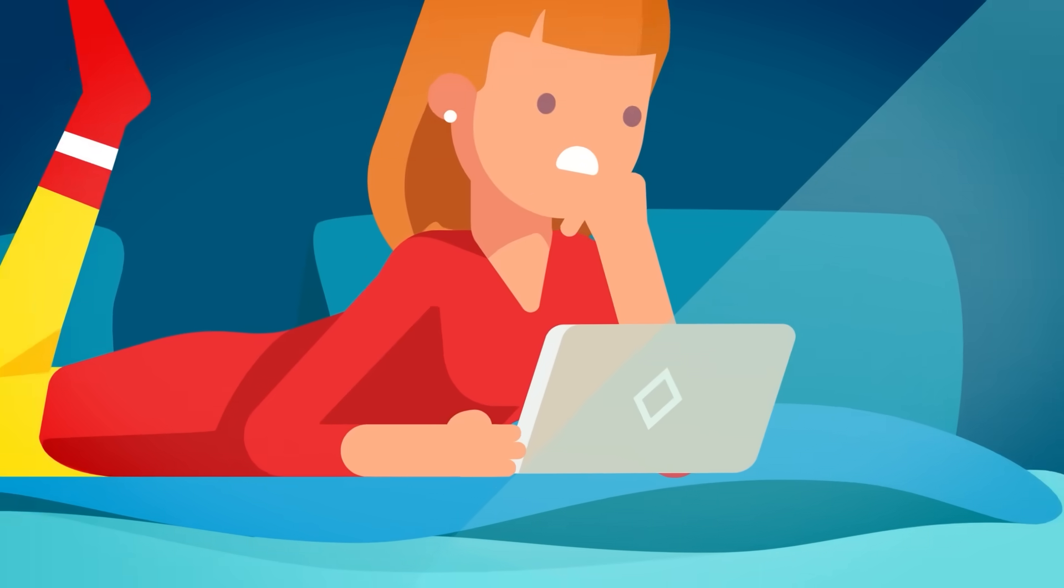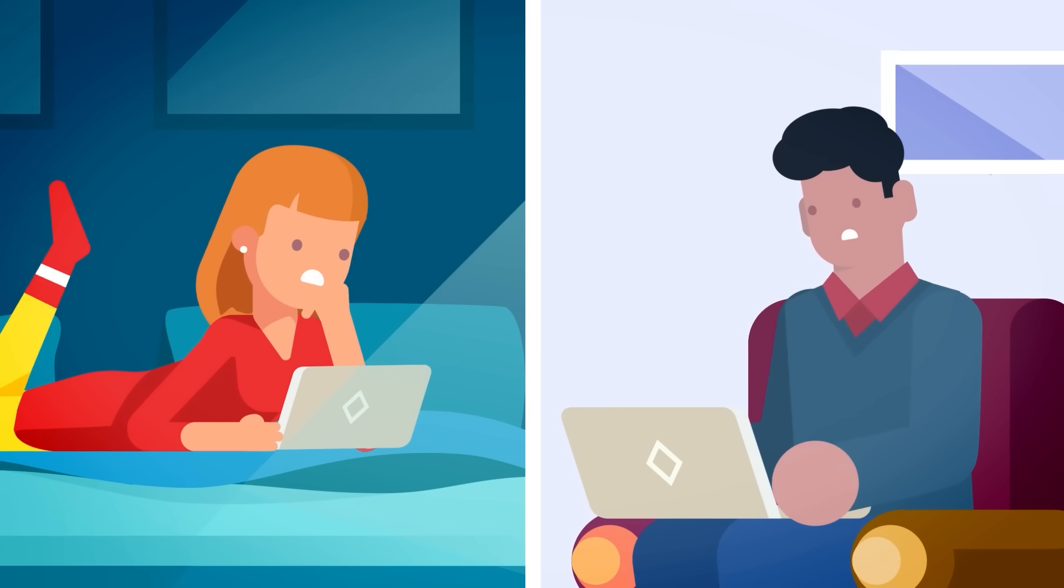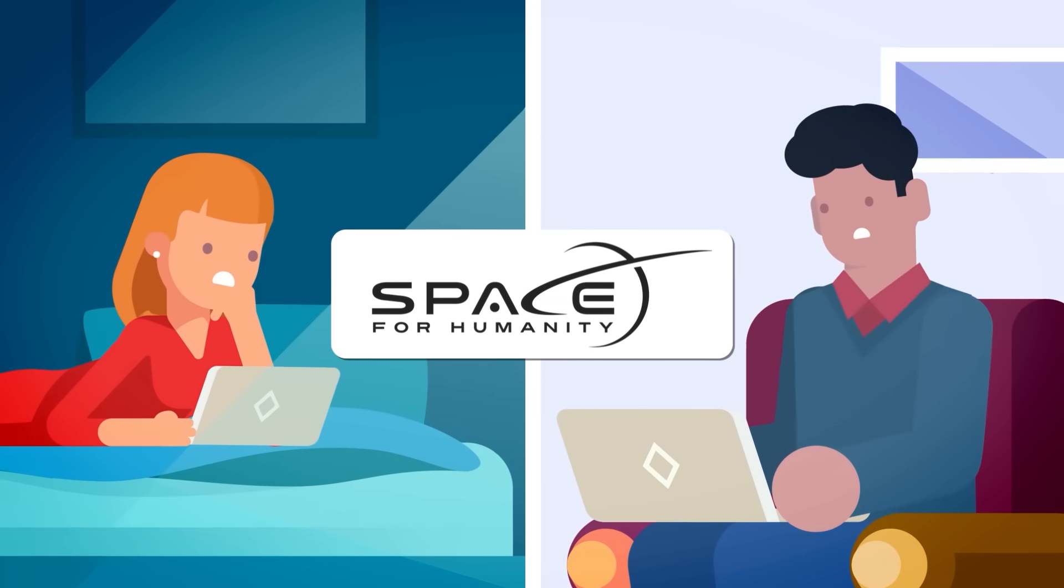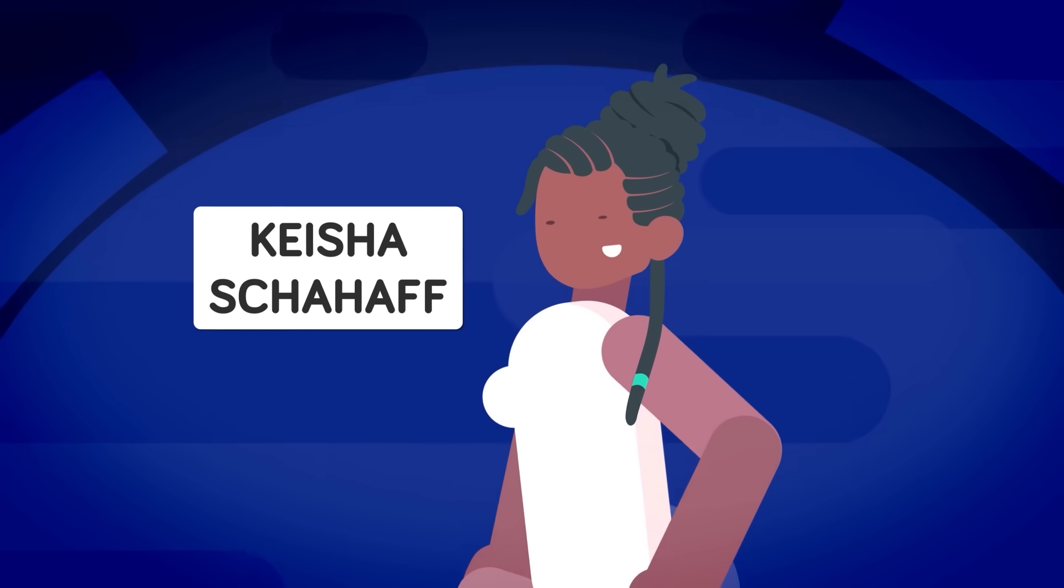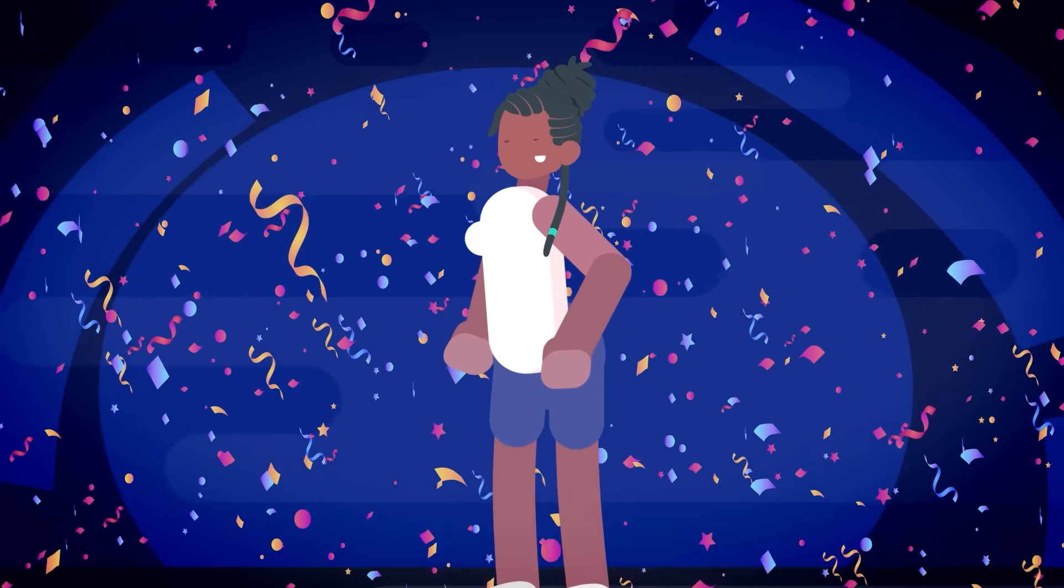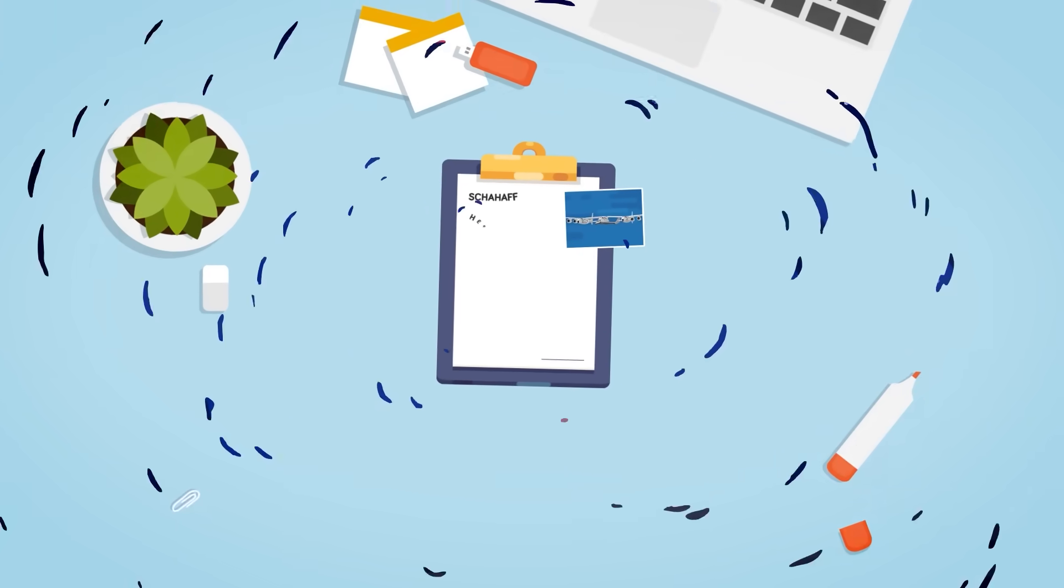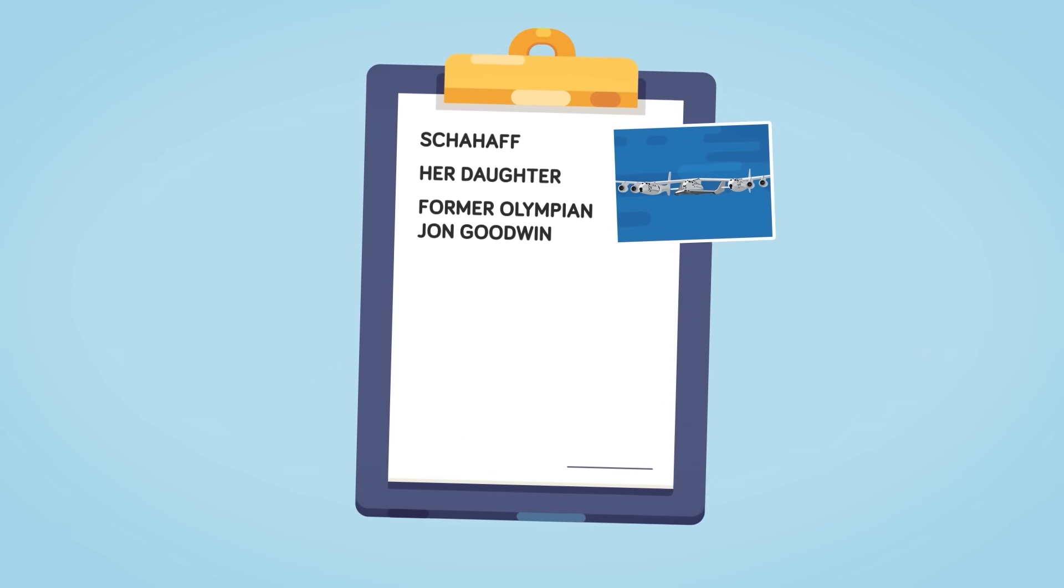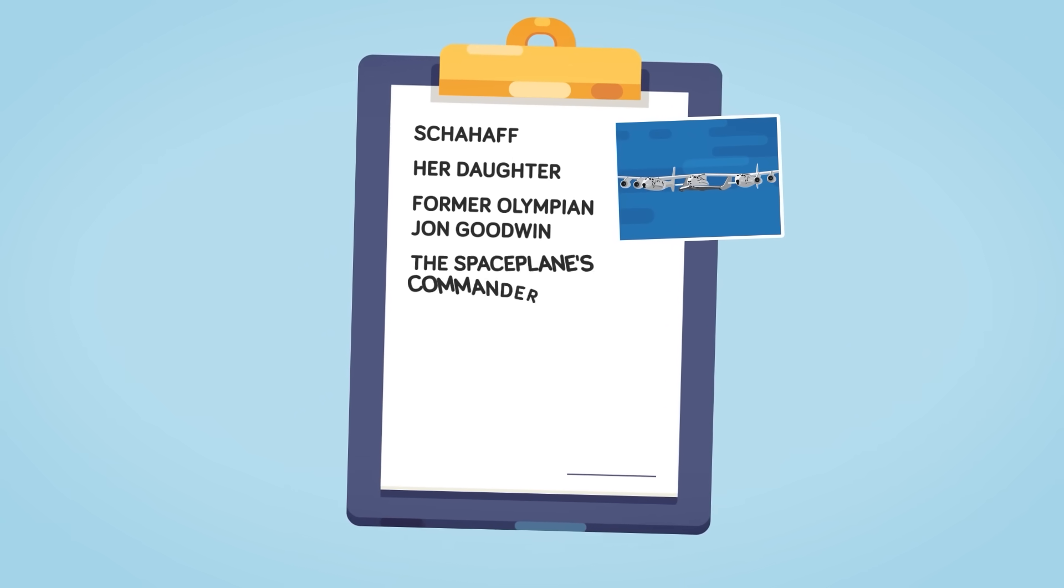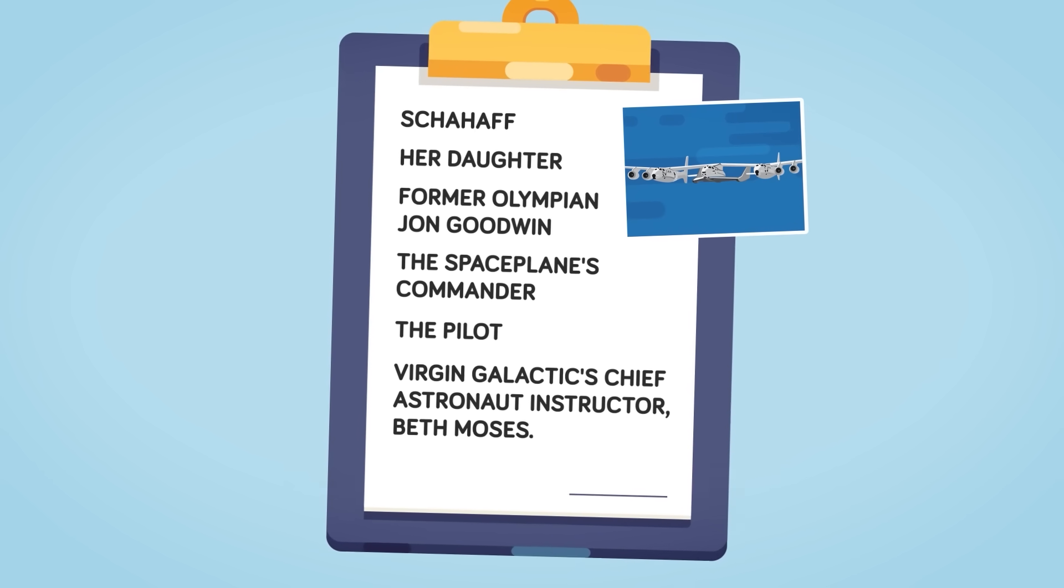Okay, that's not exactly true. You could also be lucky enough to win a fundraising competition by the organization Space for Humanity, a non-profit intending to make space travel more accessible. That's what happened to Keisha Shahaf, who won a spot aboard the first Virgin Galactic flight for space tourists rather than passengers with professional experience. Shahaf, her daughter, and former Olympian John Goodwin climbed aboard the Unity in August of 2023, along with the space plane's commander, the pilot, as well as Virgin Galactic's chief astronaut instructor, Beth Moses.